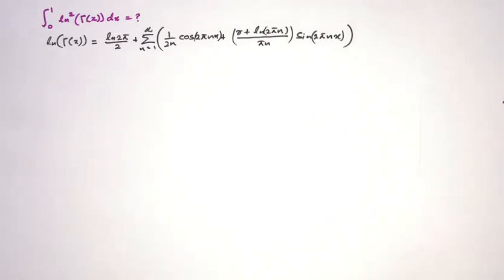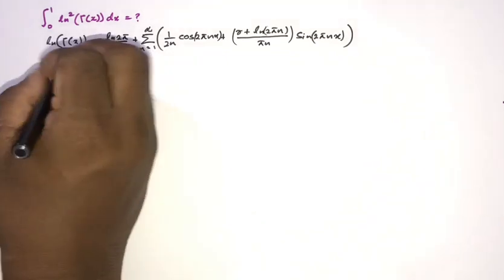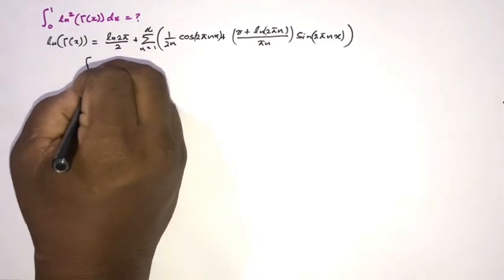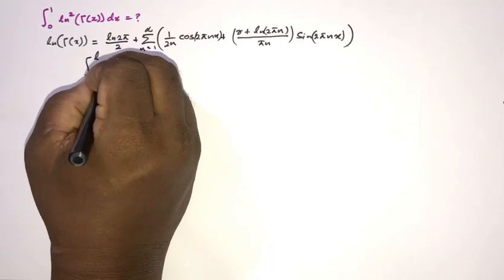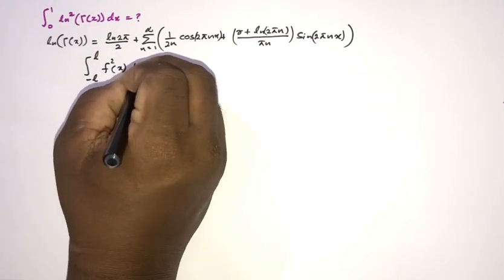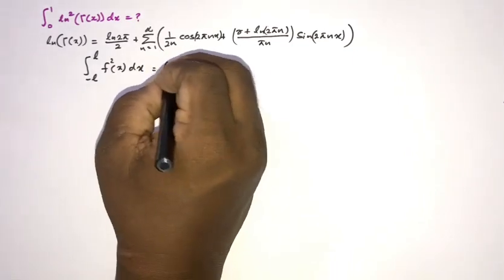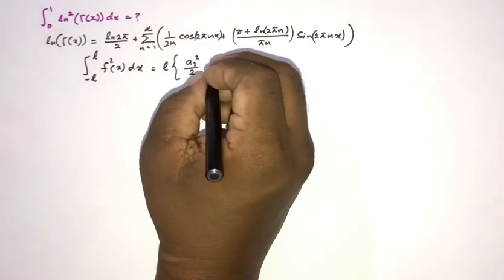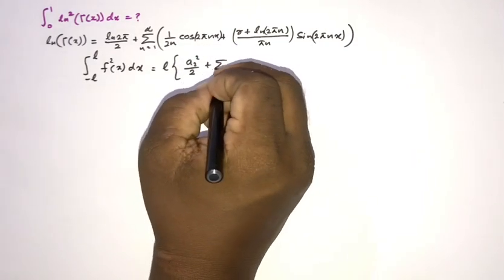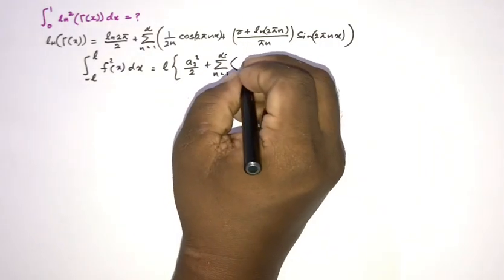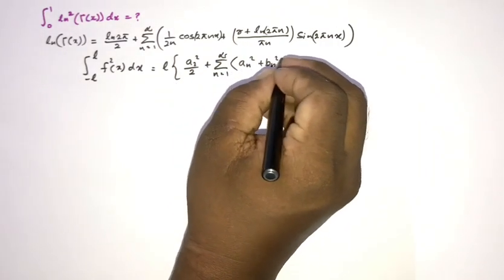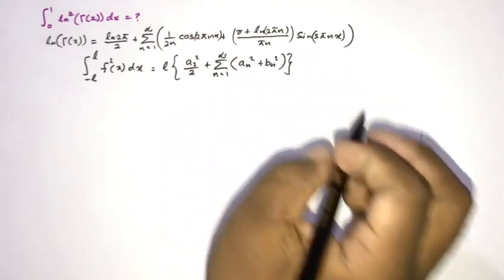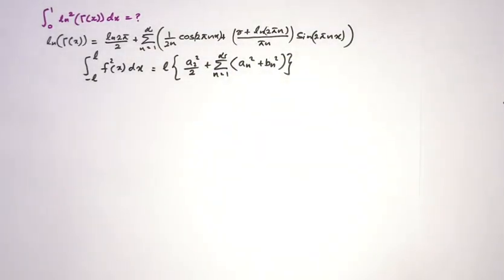We are going to apply Parseval's theorem. The Parseval identity states: ∫₋ₗˡ [f(x)]² dx = l · [a₀²/2 + Σ(n=1 to ∞)(aₙ² + bₙ²)]. This is the Parseval identity we will now apply.